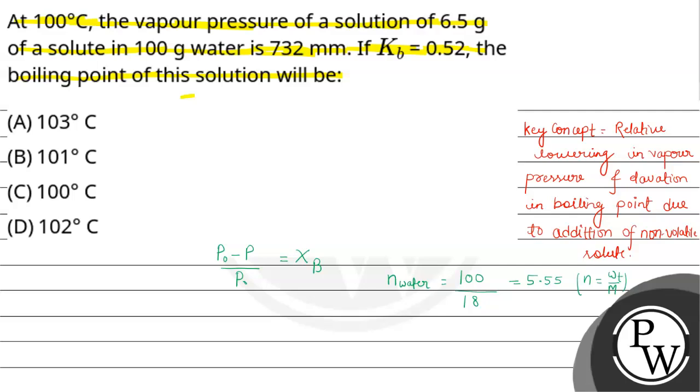Now we will use this expression. P0 will be 760 mm of Hg at 100 degrees Celsius and P will be 732 mm as given.